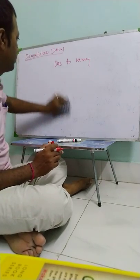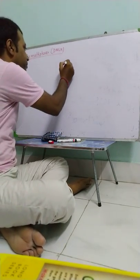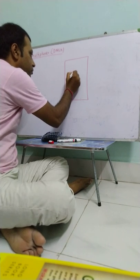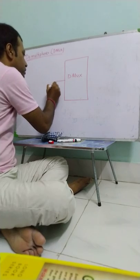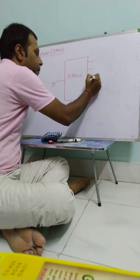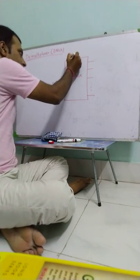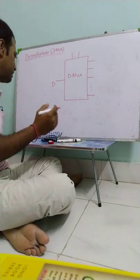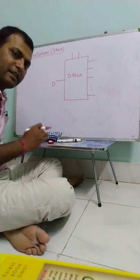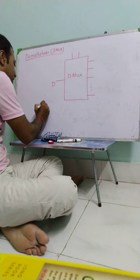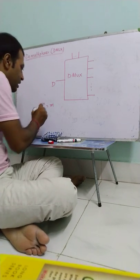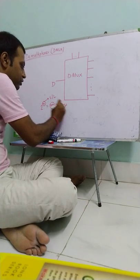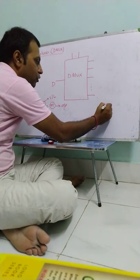Now we look at the block diagram of demultiplexer. One input and many outputs depends upon the number of select lines. Similar to multiplexer, the relation between select lines and output channels is 2 to the power n is equal to m. n is number of select lines and m is number of output channels.